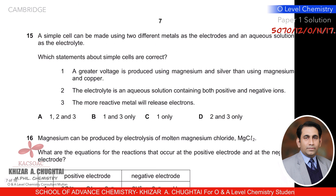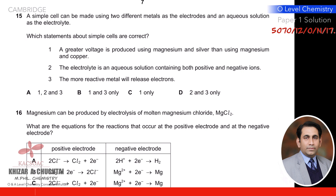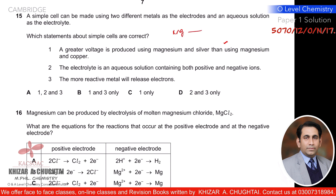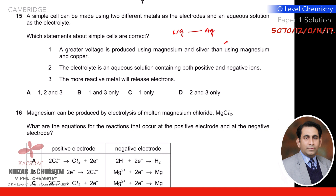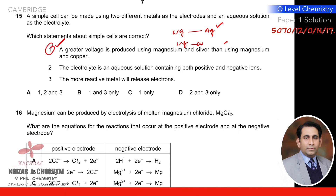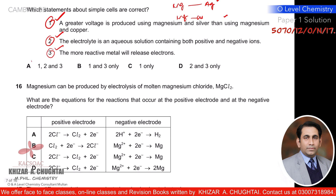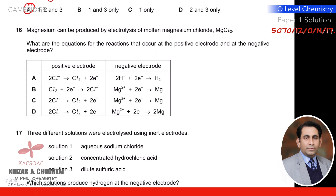Question fifteen: statements about simple cells. Statement 1: greater voltage is produced using magnesium and silver than magnesium and copper — yes, they are farther apart in the activity series. Statement 2: electrolyte in aqueous solution contains both positive and negative ions — yes, this is a fact. Statement 3: the more reactive metal will release electrons — yes, also true. So A is the correct option.